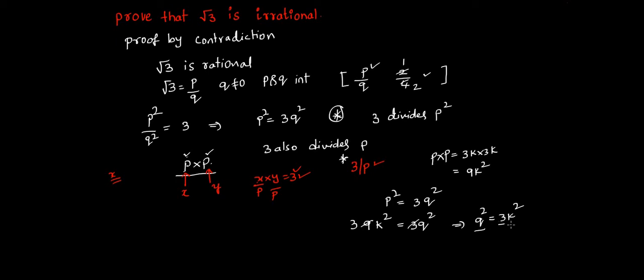equal to 3 into some integer. That means Q square is also divisible by 3. That means 3 divides Q square, right? If 3 divides Q square, then 3 divides Q. Correct. Now remember one more information that 3 divides Q.